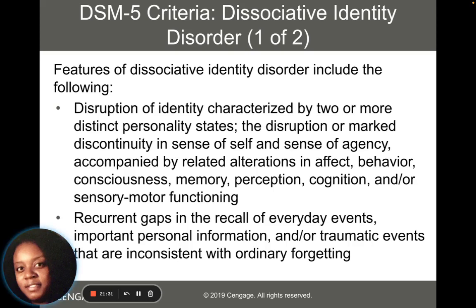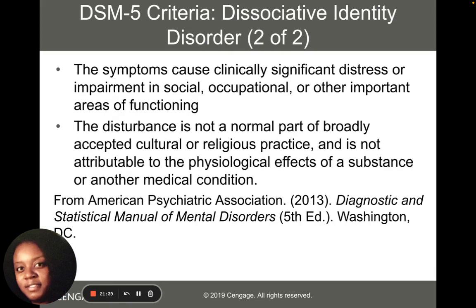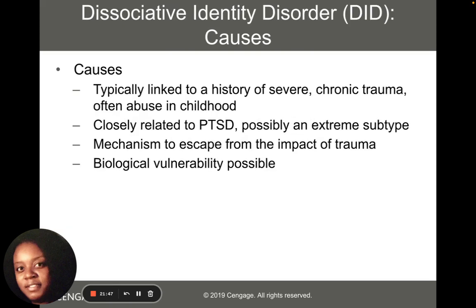Here are the diagnostic criteria according to the DSM for dissociative identity disorder — there are two pages of them. When it comes to causes, dissociative identity disorder is usually based on a history of severe chronic trauma, often abuse that occurred in childhood. It's very closely related to PTSD because it is a way for a child or young person to deal with the trauma they're experiencing. It's thought that these other personalities take over and help the child endure the pain they can't suffer — it's kind of an escape from the trauma. There is also biological vulnerability that could be possible and may run in families.